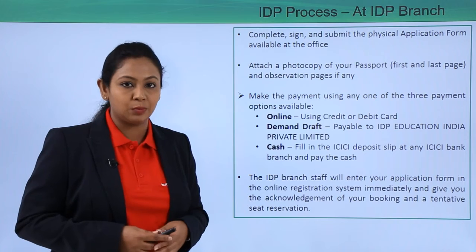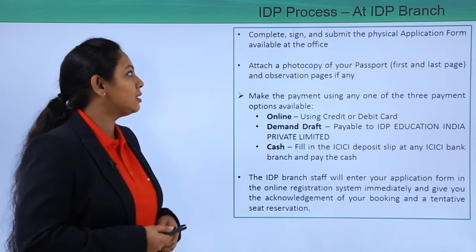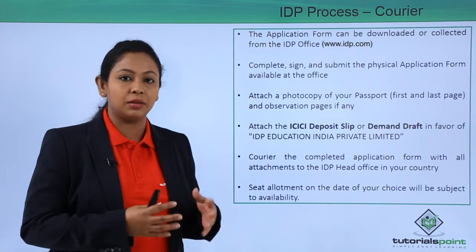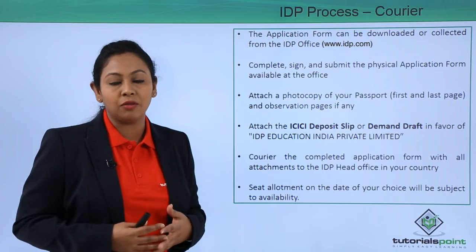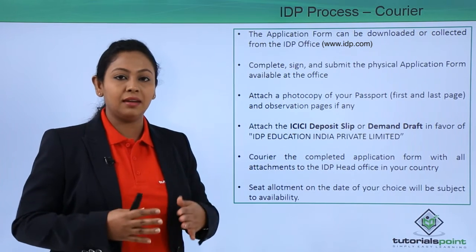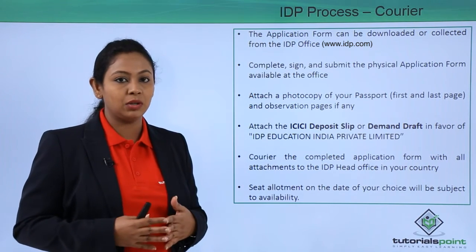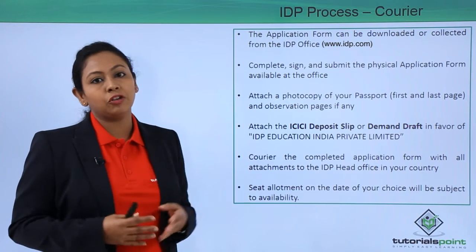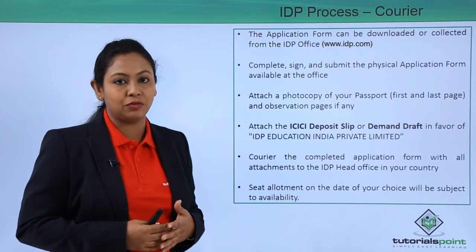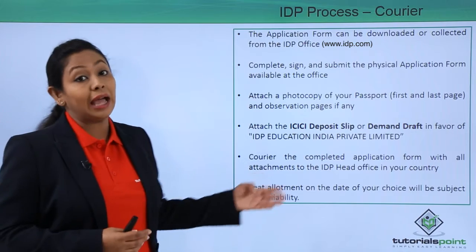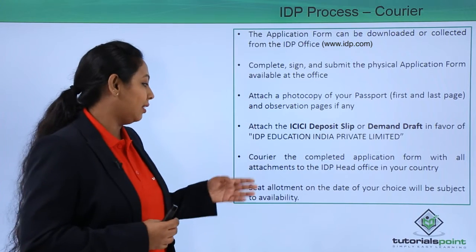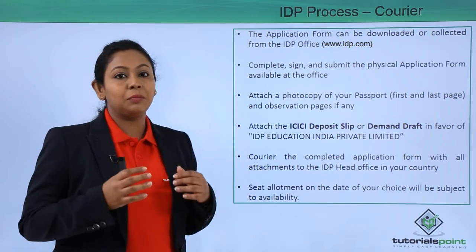The IDP courier method is similar to registering at the branch. Download the form online or collect it from the branch, fill it out, and again attach the first and last page of your passport. Make a payment through demand draft or cash deposit slip, attach those documents to the application form, and courier all details to the IDP head office of your country.